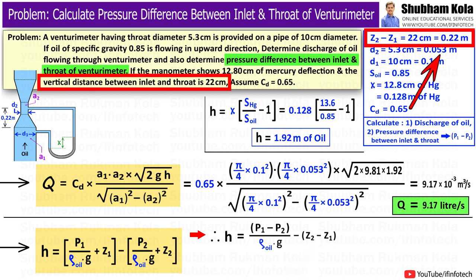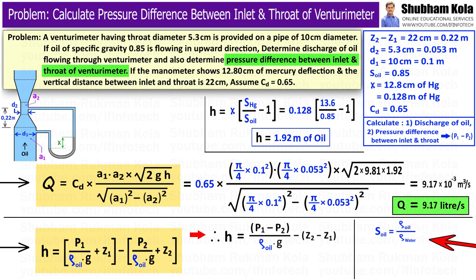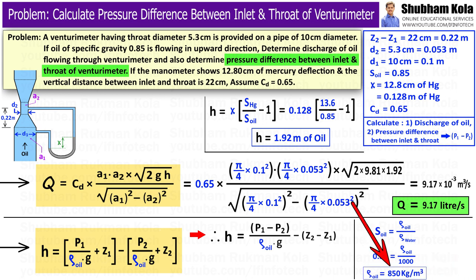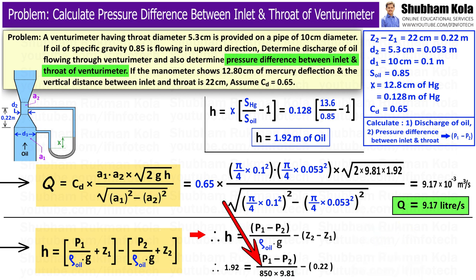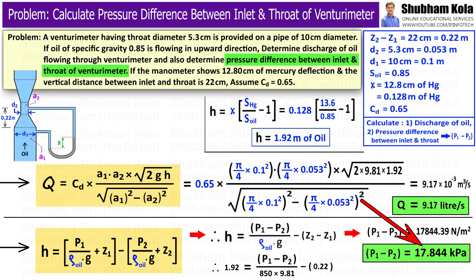The value of z2 minus z1 is 0.22 m. Here ρ is the density of oil, which we calculate from the specific gravity: density of oil equals specific gravity times density of water (1000), giving 850 kg/m³. Substituting h = 1.92 m, ρ = 850 kg/m³, g = 9.81 m/s², and z2 − z1 = 0.22 m, we get p1 minus p2 equal to 17,844.39 N/m², confirming the pressure difference between the inlet and throat is approximately 17,844 Pa.